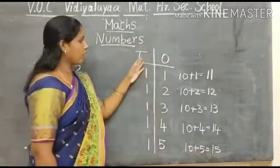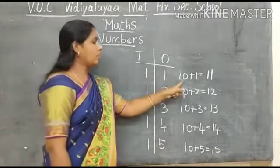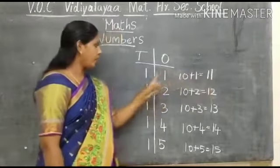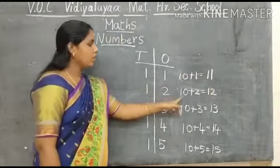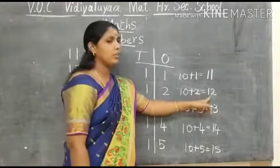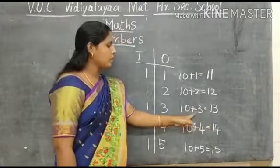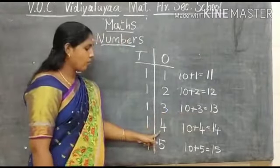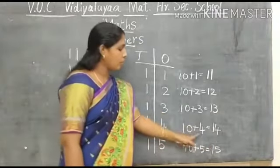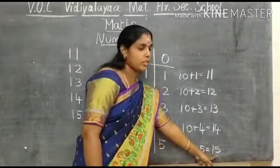Ok children, once again I am going to teach. Now we are going to learn place value. 1, 1, 11 — 10 plus 1 equal to 11. 1, 2, 12 — 10 plus 2 equal to 12. 1, 3, 13 — 10 plus 3 equal to 13. 1, 4, 14 — 10 plus 4 equal to 14. 1, 5, 15 — 10 plus 5 equal to 15. Ok children, did you understand?